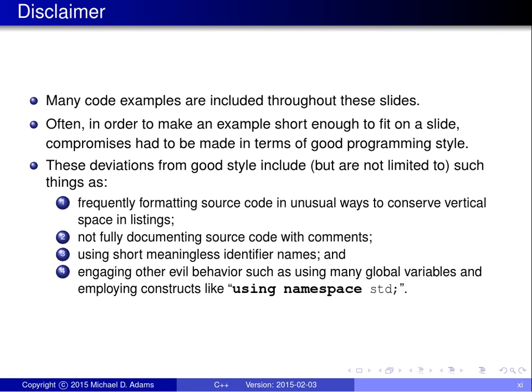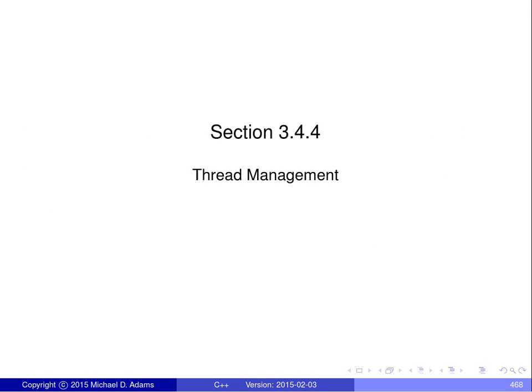Often, in order to make an example short enough to fit on a slide, it's necessary to make a lot of compromises in terms of good programming style. Some deviations include formatting source code in utterly bizarre ways to save space, not including any comments in the code, using short meaningless identifier names, and so on. These things are truly evil — do not ever do them in real code, but understand that for the purposes of examples fitting onto slides, it's necessary to do some of these truly evil things.